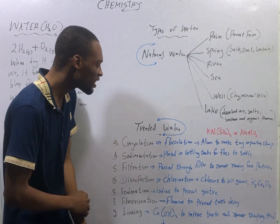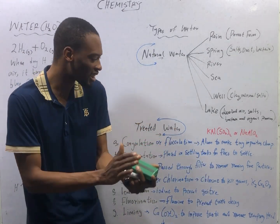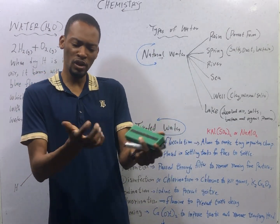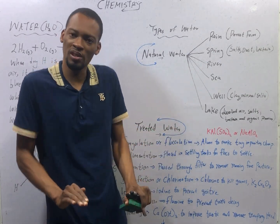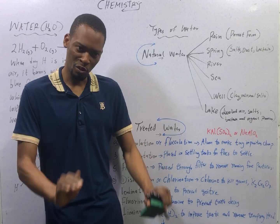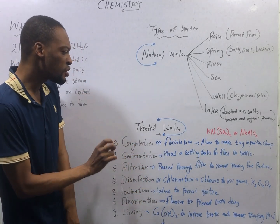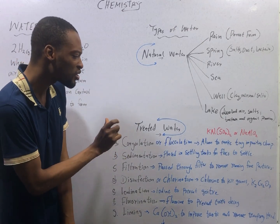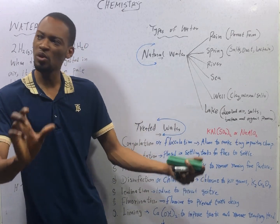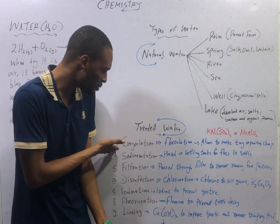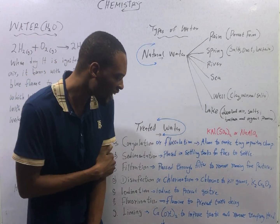Sedimentation is the process of placing water in a settling tank so that the floc — the bigger particles in water — will come together and settle down. After flocculation, you filter. In filtration, water is passed through a filter to remove the remaining particles. Particles which could not be removed via coagulation and sedimentation are removed via filtration.